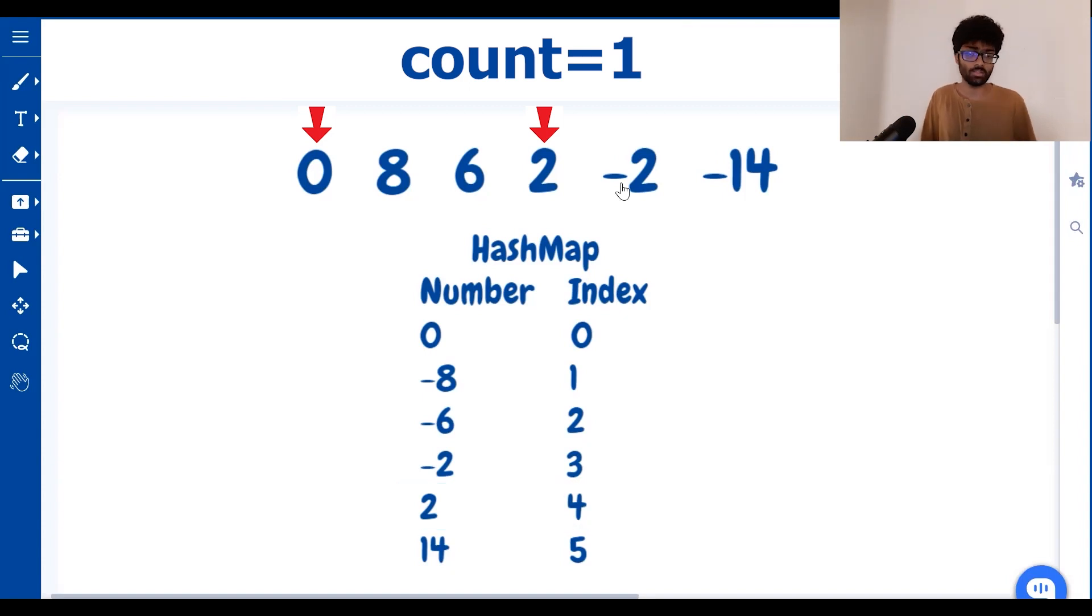But something curious you'll notice is that when we hit minus 2, this same triplet will be considered again. 0, 2 and minus 2 will be considered again. That's because 0 plus minus 2 is minus 2 which is present in our hash map. Each triplet will be counted three times. So a simple way to get around this is to divide our final answer by 3. 0 and minus 14 gives us nothing. It gives us minus 14 which is not in our hash map so we ignore it.